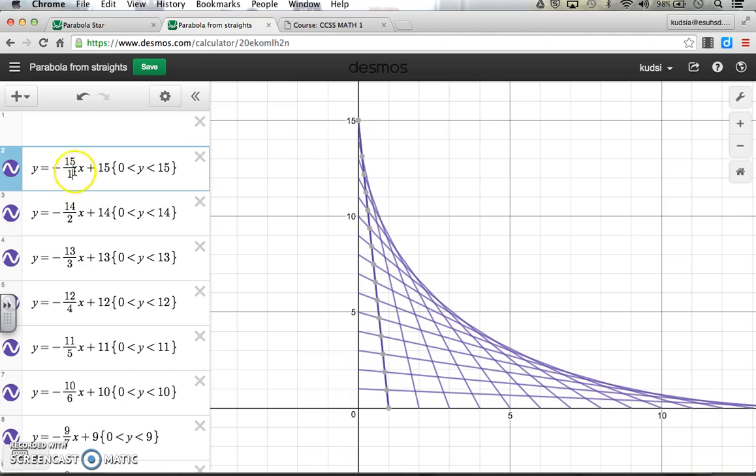So basically, the shortcut to that is start at 15 on the top and count down. Start at 1 on the denominator and count upwards. So the numerator starts at 15 and counts down. Denominator starts at 1 and counts up.